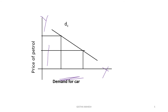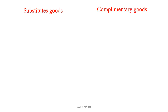As the price of petrol decreases, demand for car increases. So there is an inverse relationship — both move in opposite directions — giving a negative, downward slope. This confirms the inverse relationship between the price of petrol and demand for car.